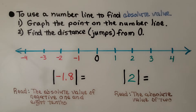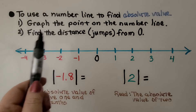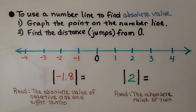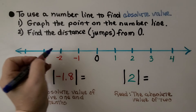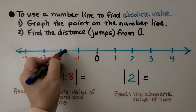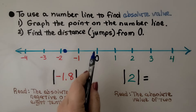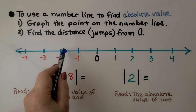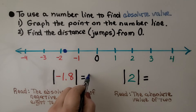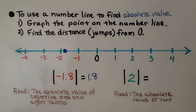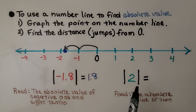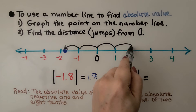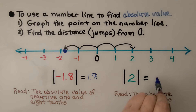To use a number line to find absolute value, the first thing we do is graph the point on the number line, then we find the distance — the jumps from zero. For negative one and eight-tenths, eight-tenths is very close to two but not past two. We can see it is one and eight-tenths jumps from zero, so its absolute value is one and eight-tenths. For positive two, it is two jumps from zero, so the absolute value of two is two.